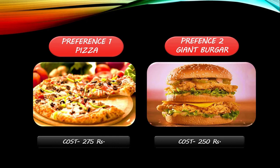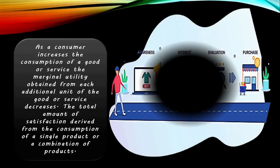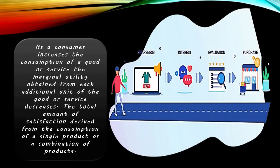As a consumer increases the consumption of a good or service, the marginal utility obtained from each additional unit decreases. The total amount of satisfaction is derived from the consumption of a single product or a combination of products. Utility represents the relationship between the amount of goods consumed and the happiness or satisfaction a consumer gets. In consumer behavior, there are mainly two approaches.